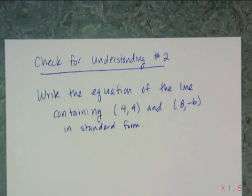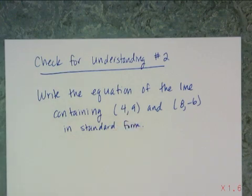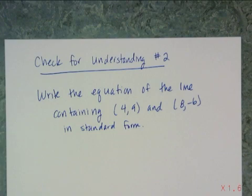For the next check for understanding, write the equation of the line containing the points (4, 9) and (8, negative 6) in standard form. How you do it is up to you — write it in point-slope or slope-intercept and convert, or use the direct slope formula method to get straight to standard form.